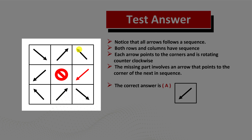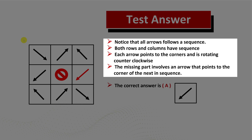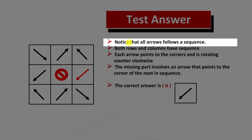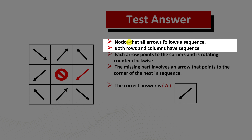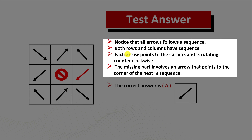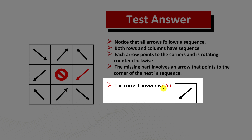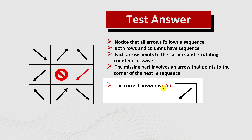Let's recap: all arrows follow a sequence, both rows and columns have sequences, and each arrow points to the corners rotating either counterclockwise or clockwise. The missing part involves finding the arrow that matches the pattern. The correct choice here is choice A — arrow pointing in the bottom left corner. Hopefully you've nailed this question and now know how to answer these types of questions on the test.